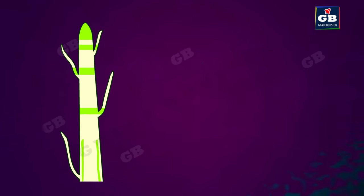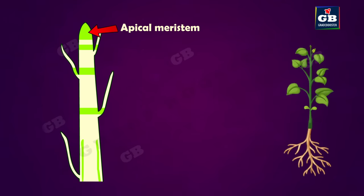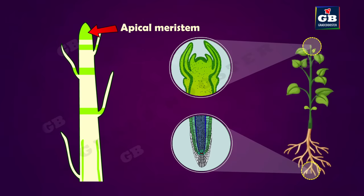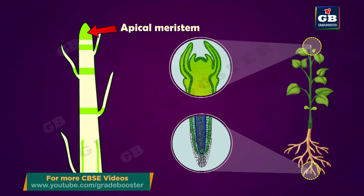Apical meristem. This meristematic tissue is present at the tips of stem and root. Apical meristem helps the stem and roots to increase their growth lengthwise.